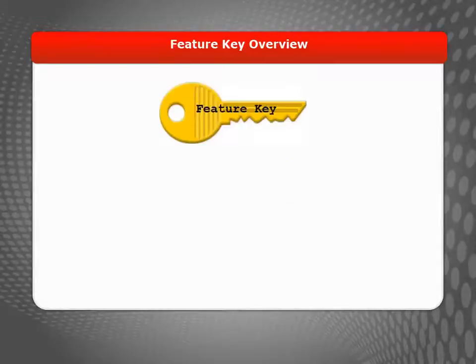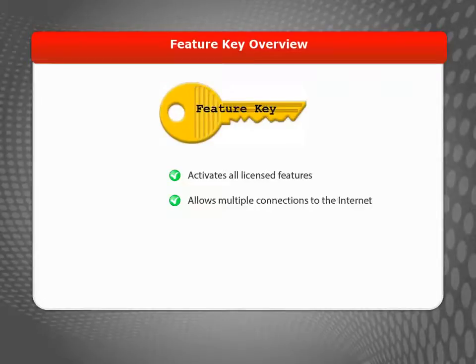Your Firebox uses a Feature Key to activate all licensed features, including any Security Services subscriptions. Without a Feature Key, your Firebox will only allow one connection to the Internet.